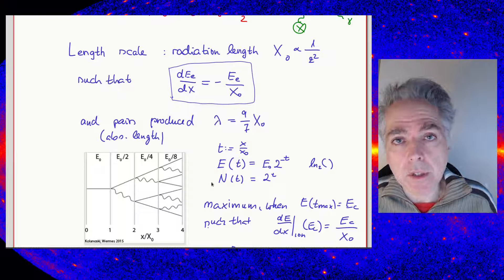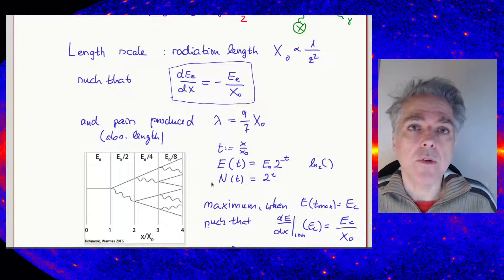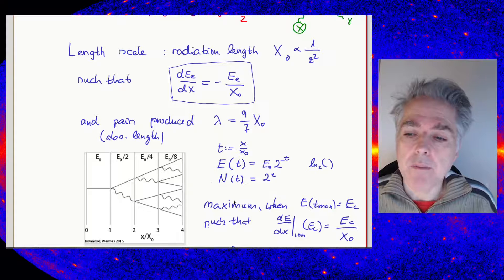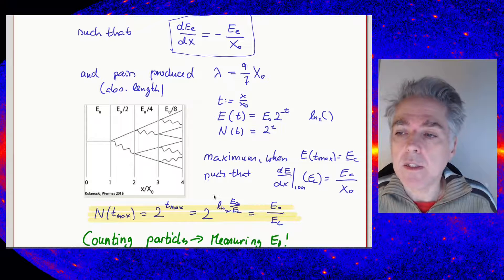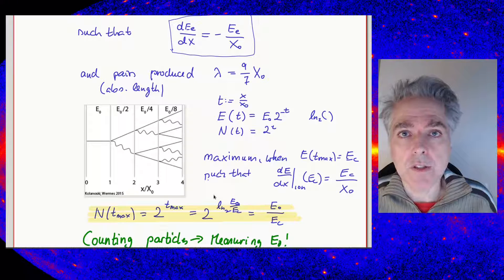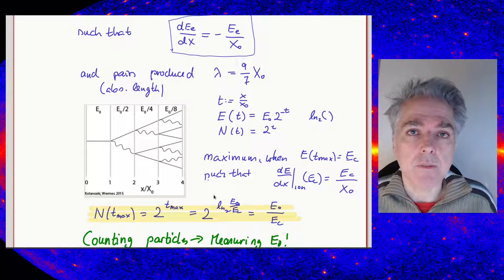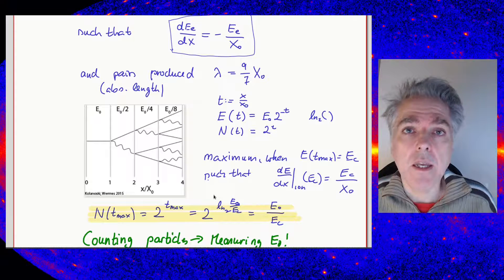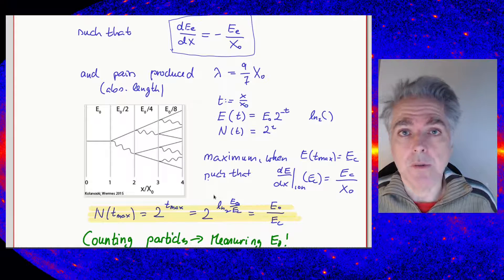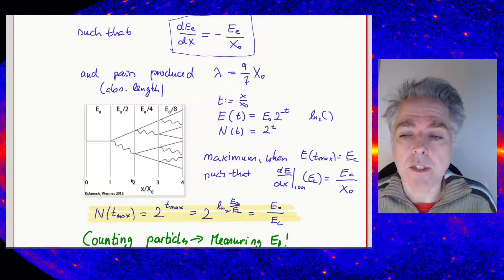We can make a simplifying assumption: after roughly one radiation length, electrons will Bremsstrahlung and photons will pair produce. We introduce the quantity T, defined as the ratio of path length over radiation length, so T counts the number of radiation lengths in the medium. In this simplified scheme, secondary particles each carry half the incoming energy. We divide the medium into, in this case, four radiation lengths.